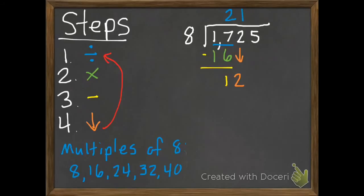Second step, multiply. 1 times 8 is 8. Third step, subtract. 12 subtract 8 is 4. And then I can still bring something down, my 5. Since I brought it down, I start over again with division. 45 divided by 8.